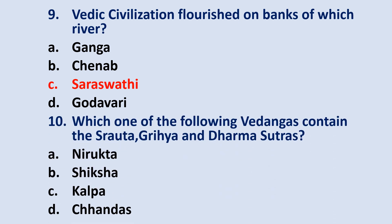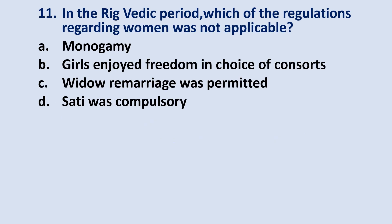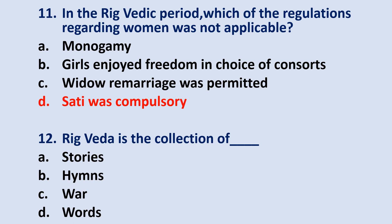Question number 10: which one of the following Vedangas contains the Sraudas, Grihya and Dharma Sutras? The answer is option C — Kalpa. Question number 11: in the Rig Veda period, which of the regulations regarding women was not applicable? The answer is option D — Sati was compulsory. Question number 12: Rig Veda is the collection of hymns. The answer is option B — Hymns.